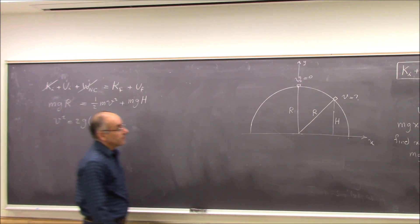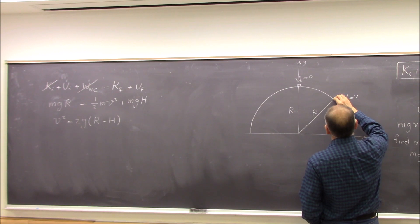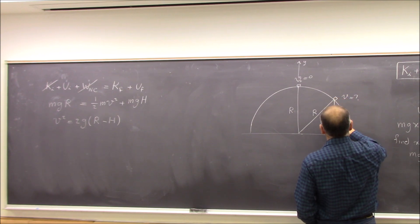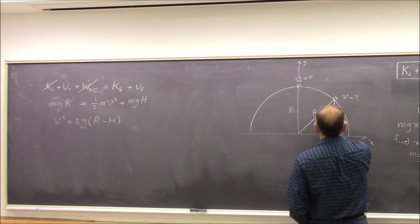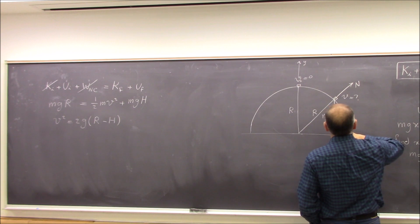So now we want to see at this point with height H, there are two forces acting on this object. One is the force of gravity, which is Mg, and one is the normal force in general, which is in this direction.